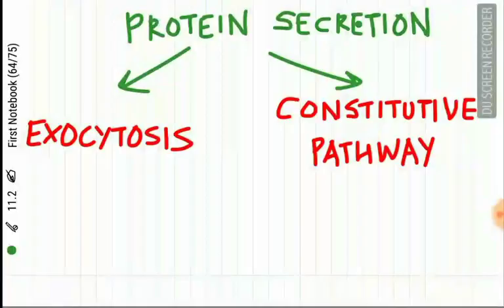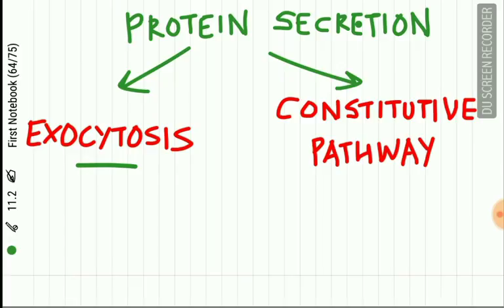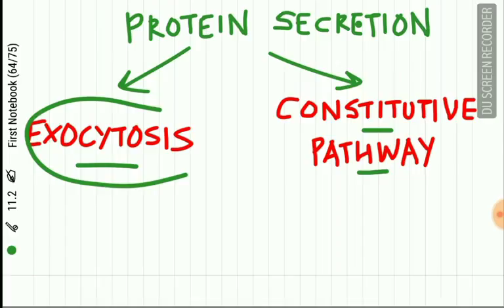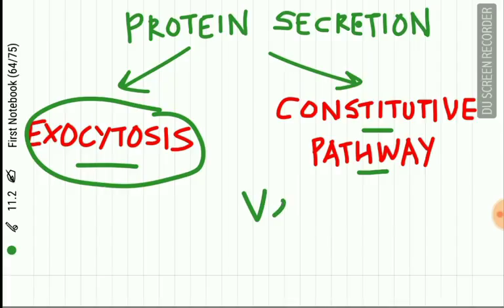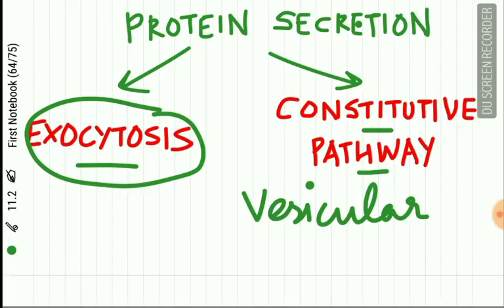Protein secretion by the salivary acinus occurs by two methods: exocytosis and the constitutive pathway. In the constitutive pathway, salivary acinar cells release protein by a vesicular mechanism — vesicles travel directly from the Golgi to the plasma membrane and are finally released.